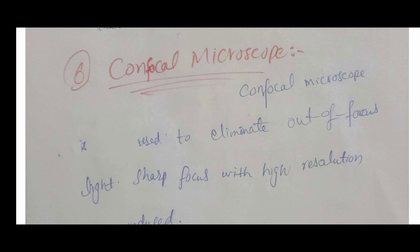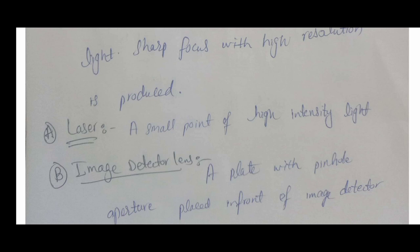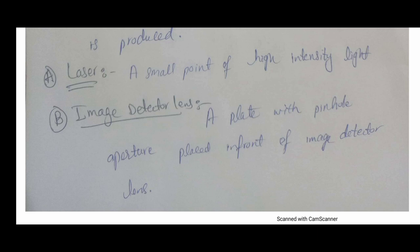The last type of light microscope is the confocal microscope. The confocal microscope is used to eliminate out-of-focus light, producing a sharp focus with higher resolution. It uses two key components: first, a laser — a small point of high-intensity light — and second, an image detector lens, which is a plate with a pinhole aperture placed in front of the image detector.